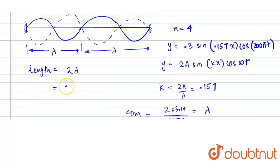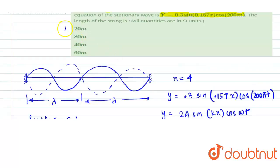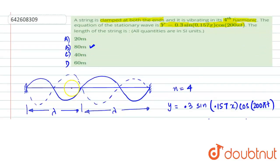Total length will become 2 into 40 which is 80 meter. And this is given to us in the option B. I hope this helps you with the answer. Thank you.